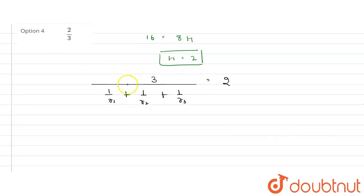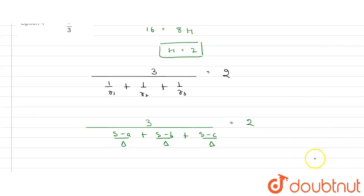Now let's further simplify this. 3 upon, so r1 is delta upon s minus a, so 1 upon r1 will be s minus a upon delta, then s minus b upon delta, and r3 value 1 upon r3 value will be s minus c upon delta, and whole it is equal to 2.